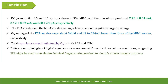Finally, these are the conclusions from the research work. CV tests showed PCA, MR1, and their co-culture produced around 2.72 mA, around 0.12 mA, and around 0.68 mA current, respectively. The PCA anodes and the MR1 anodes had intracellular impedance a few orders of magnitude larger than extracellular impedance. Intracellular impedance and extracellular impedance of the PCA anodes were about 9-fold and 31–55-fold lower than those of the MR1 anodes, respectively. Total capacitance was dominated by C_in in both PCA and MR1, and the total capacitance of the PCA anodes was nearly 2.5-fold higher than for the MR1 anodes. Different morphologies of high-frequency arcs were created from the three culture conditions, suggesting EIS might be used as an electrochemical fingerprinting method to identify exo-electrogenic pathways.